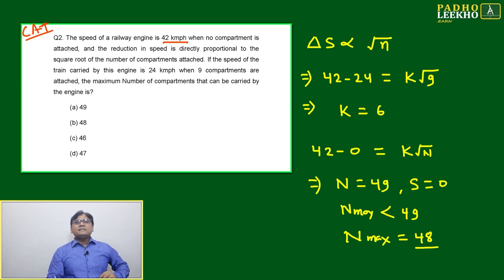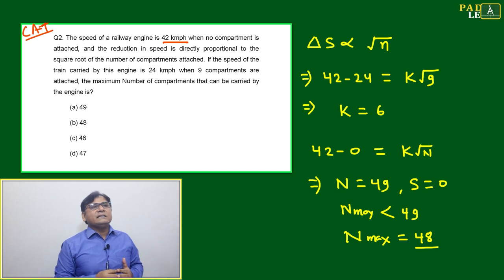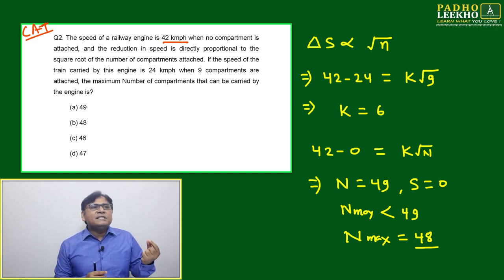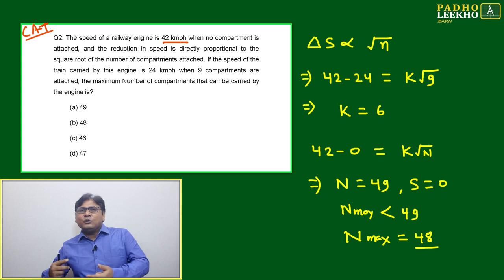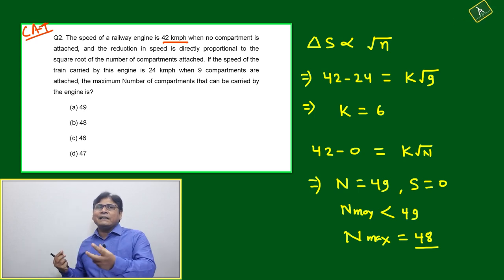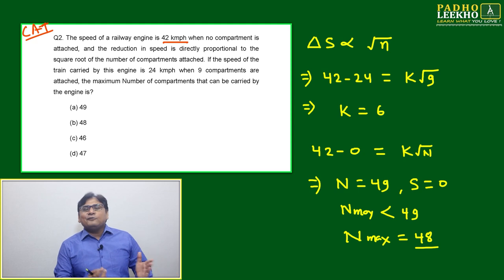If nothing is there - no bogies, no compartment - then the speed is 42 kilometers per hour, means without load. If you attach one bogie, what will happen? Load will increase, then the speed will reduce. That is common sense.